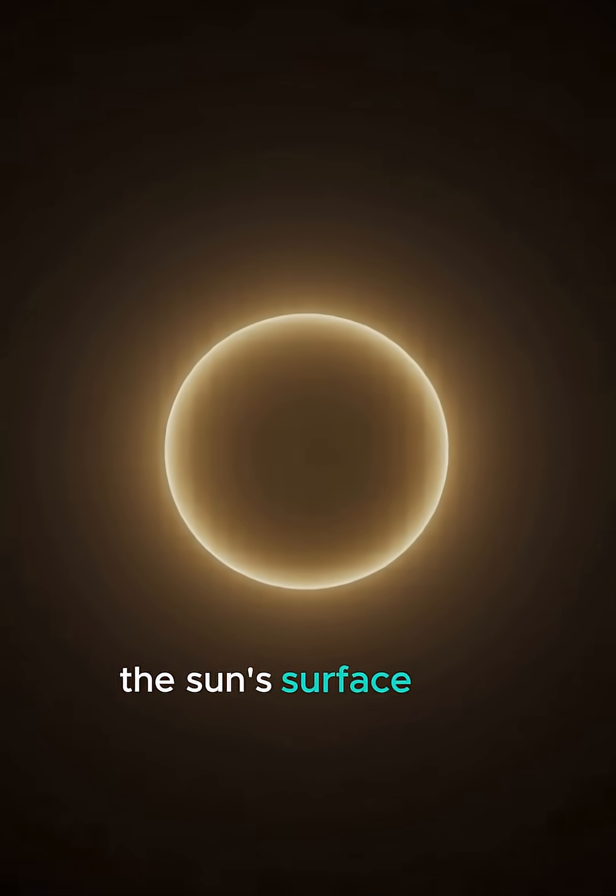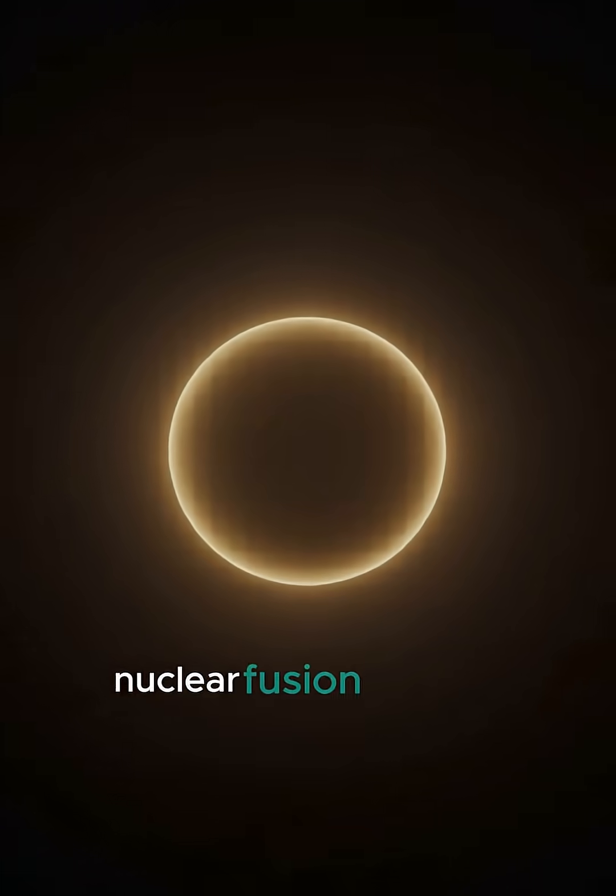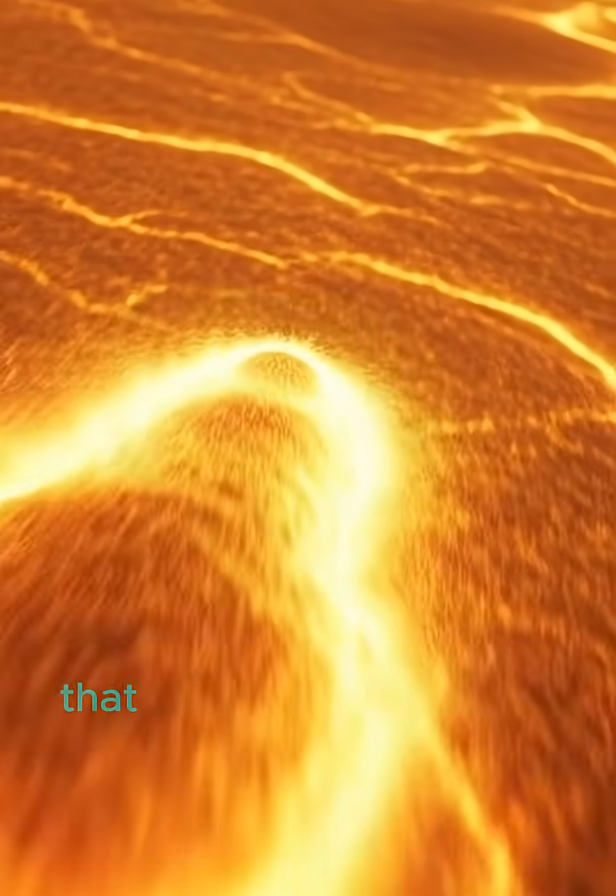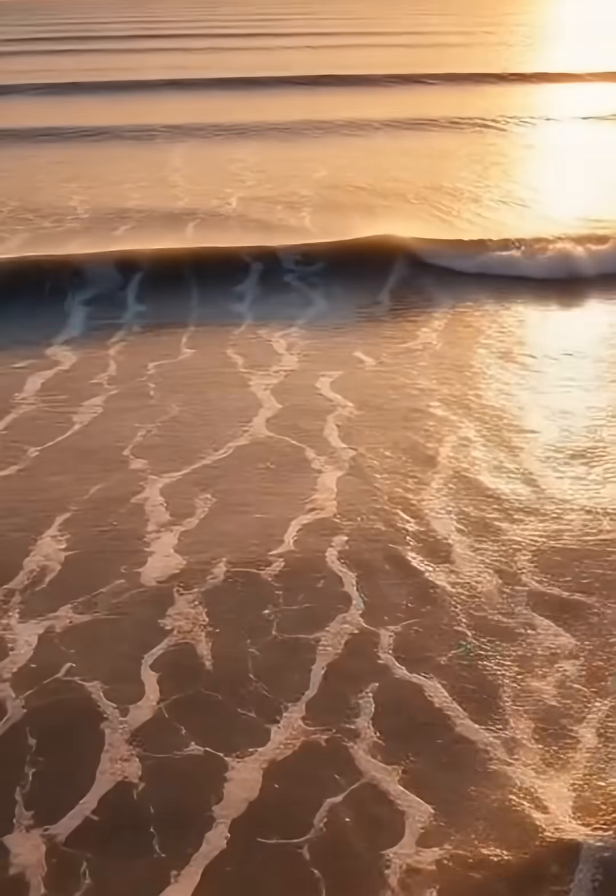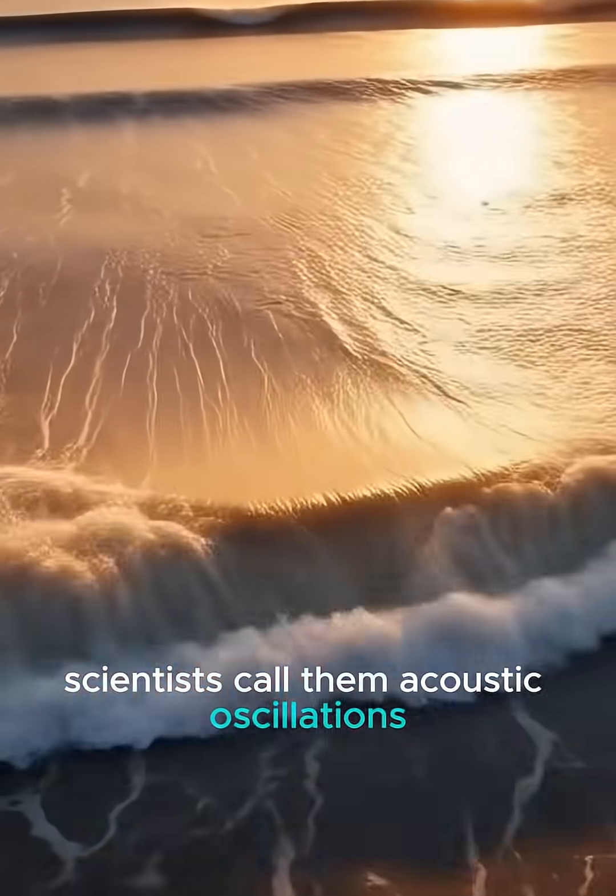The Sun's surface is in constant motion. Nuclear fusion creates pressure waves that ripple across its surface at hundreds of miles per hour. Scientists call them acoustic oscillations.